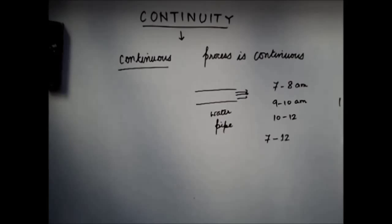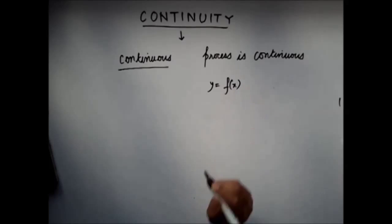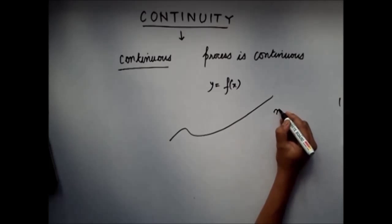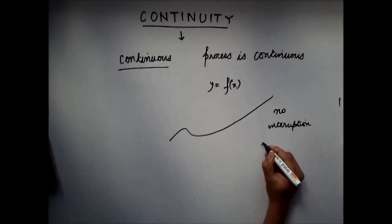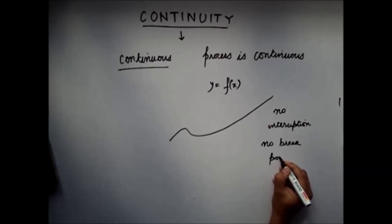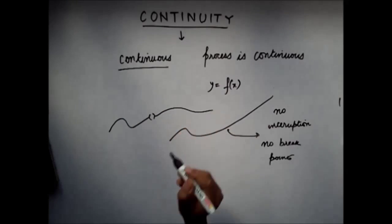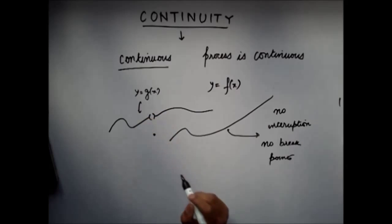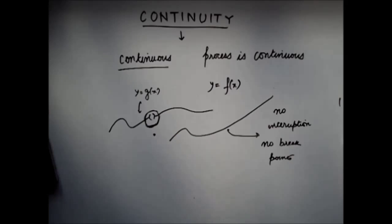In mathematics, we follow a similar analogy. If you say that y equals f(x) is a continuous function, that means when you draw the graph of the function y equals f(x), there is no interruption or breakpoints. Whereas if you draw another function y equals g(x), you can see that there is an interruption at a point — a breakpoint — so this function is a discontinuous function.